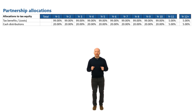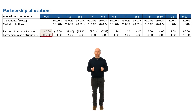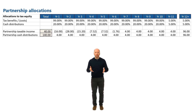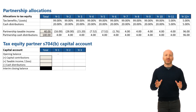The total partnership taxable income or loss and the cash distributions for the partnership that we calculated earlier are also shown right here on the screen, with a total income of $40 million over the life and distributions of $140 million over the life. Now we need to allocate these losses and distributions into capital accounts in order to prove that one partner doesn't take out more from the partnership than they're permitted to take out. So let's model out the 704B capital account for the tax equity partner.